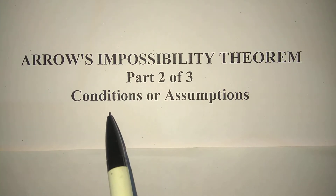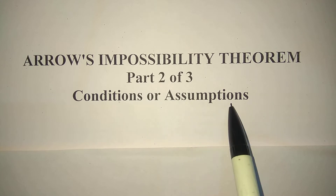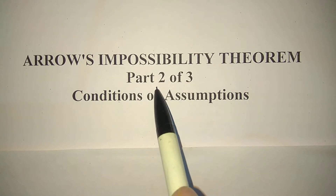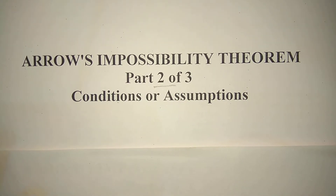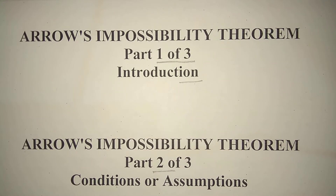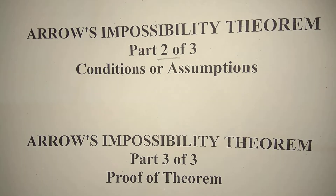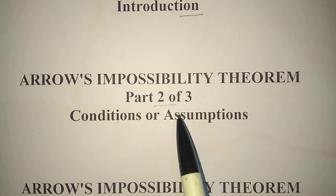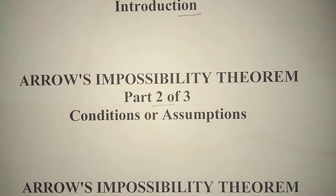In this video we will discuss conditions or assumptions of Arrow's Impossibility Theorem. This is Part 2 of three videos on Arrow's Impossibility Theorem. Part 1 is related with the introduction of this theorem, Part 2 explains assumptions, and in Part 3 this theorem is proved.